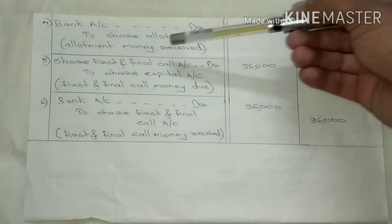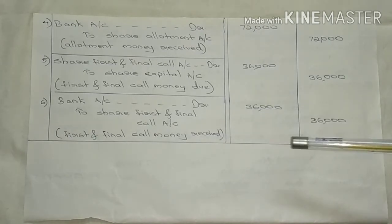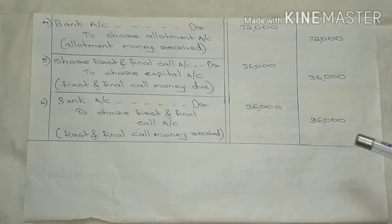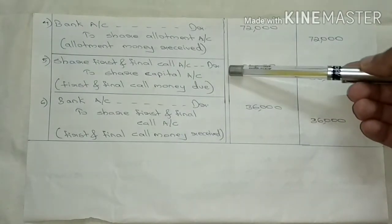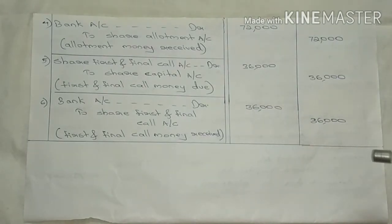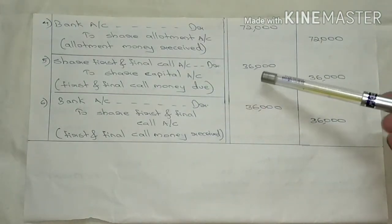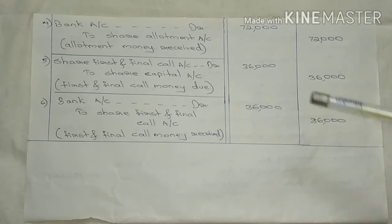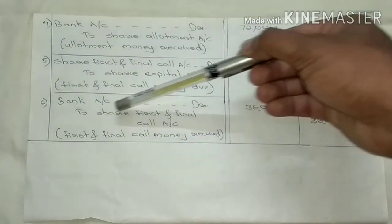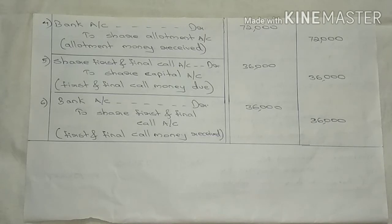Bank Account debited to Share Allotment Account — allotment money received: ₹72,000. Then Share First Call and Final Call Account debited to Share Capital Account — first and final call money due: ₹36,000. That is 18,000 shares at ₹2 each = ₹36,000. Bank Account debited to Share First and Final Call Account — ₹36,000 received.